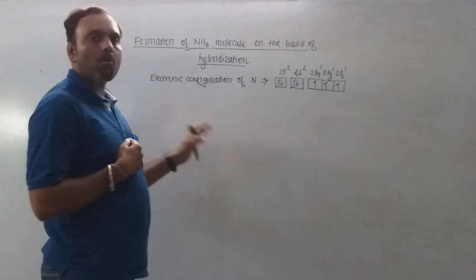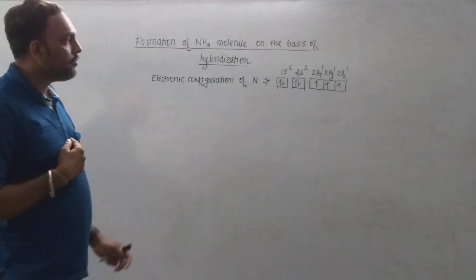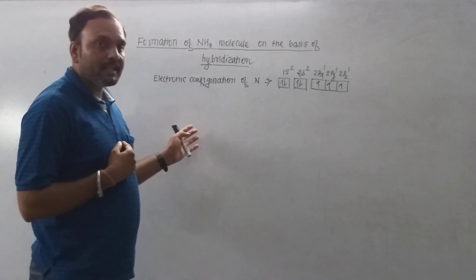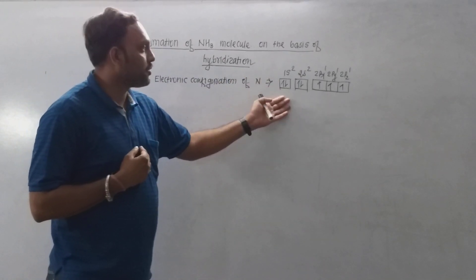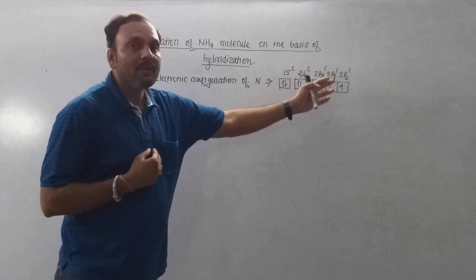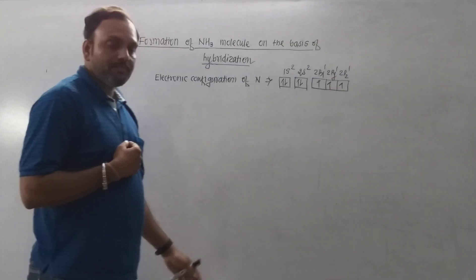In ammonia, nitrogen is present as a central atom, having atomic number 7, whose electronic configuration can be written as 1s², 2s², 2px¹, 2py¹ and 2pz¹.